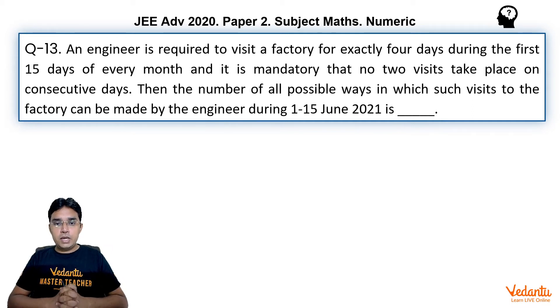An engineer is required to visit a factory for exactly 4 days during the first 15 days of every month and it is mandatory that no two visits take place on consecutive days. Then the number of all possible ways in which such visits to the factory can be made by the engineer during 1 to 15 June 2021.